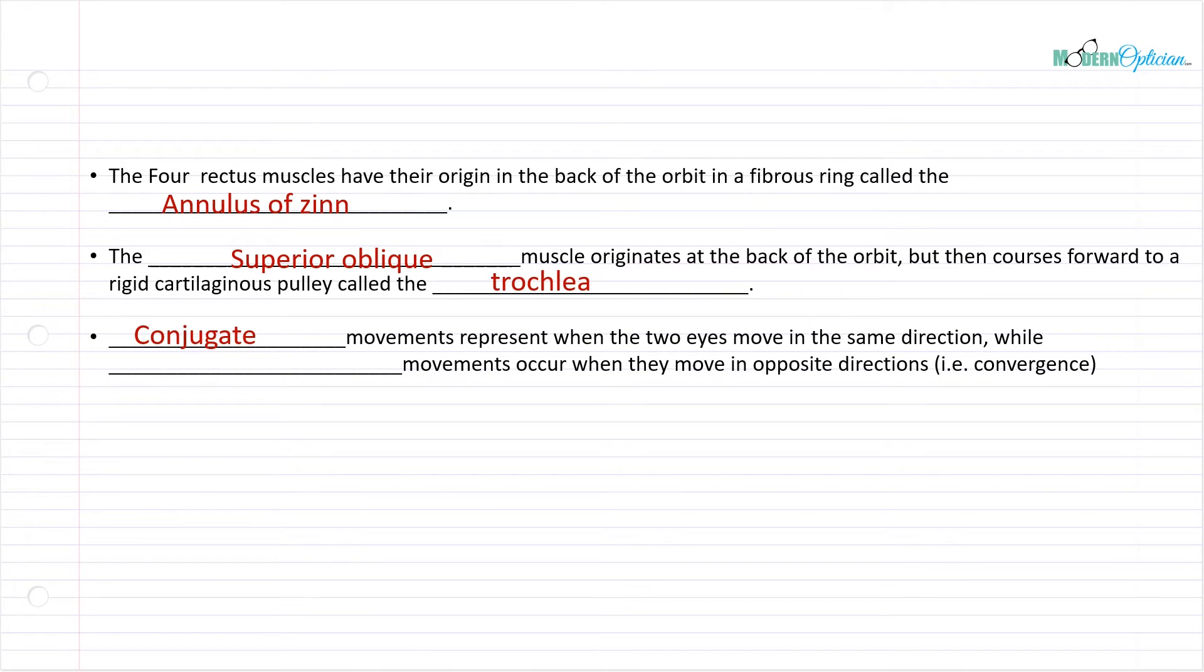Conjugate movements of the eye represent when the two eyes move in the same direction, while disjunctive movements occur when they move in the opposite direction. There's only really one opposite movement, convergence. Very unlikely unless somebody has tremendous control over their eye muscles to turn their eyes outwards away from their nose. The only other time you would have a disjunctive movement is coming back from convergence and moving the eyes back to a centered position.